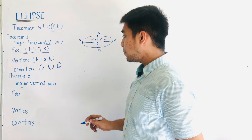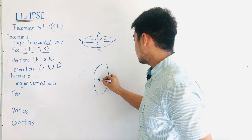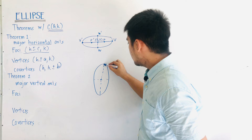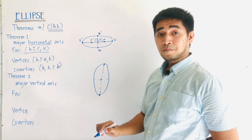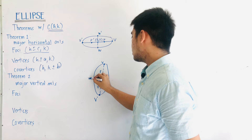For Theorem 2, it states that it is a major vertical axis. When we say major vertical axis, our ellipse will somehow look like this. This is our center. Because this is a major vertical axis, we can see that in the vertical axis lie the foci. This will be f, and this will be f prime. And the vertices: this will be v, and this will be v prime. This is w prime and this is w.